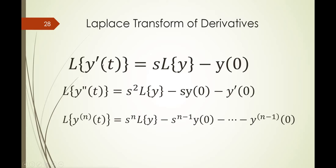The first derivative of the function of t is simply s times the function y(s), minus y sub 0. For the second derivative, it's s squared times y(s), then you decrease the power of s but increase the powers of y. You start with y sub 0, so it's s times y sub 0. But here, there's no more s to write because it's s to the 1, so you increase the order of the derivative.